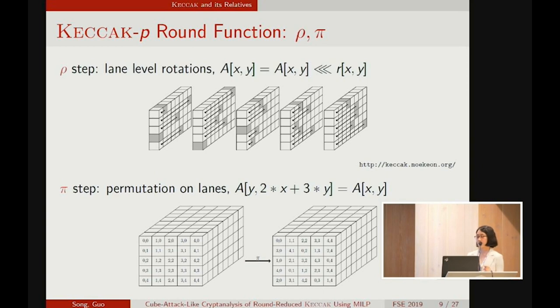The properties of the so-called CP kernel is widely used in attacks against KECCAK. The rho step rotates the bits within lanes, and pi step shuffles the lanes.